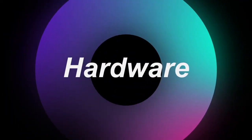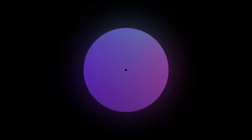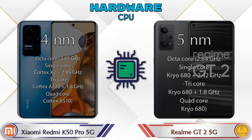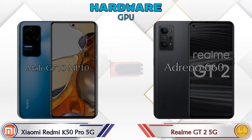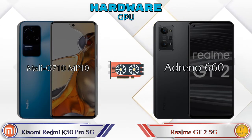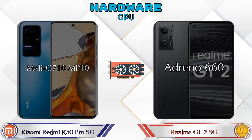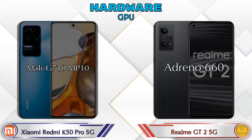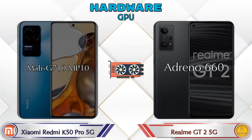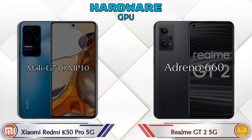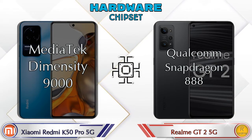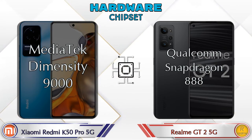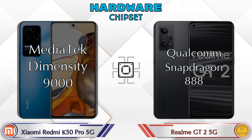First, let's talk about the most important part of phone hardware — the CPU and GPU. Mali G710MP10 is available in the K50 Pro 5G and Adreno 660 is available in the GT2 5G. For chipset, MediaTek Dimensity 9000 is available in the K50 Pro 5G and Qualcomm Snapdragon 888 is available in the GT2 5G.